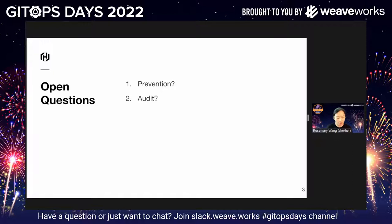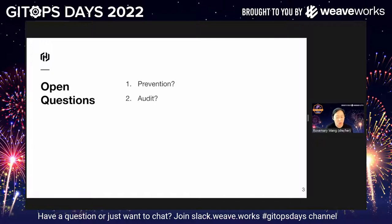Another big question that I got from the open source community and developers was about auditing. My security team wants me to audit how I'm using these secrets. When you have this model of encrypting and then putting it in version control, it's really difficult to ascertain who's using the secret, when, how, and why, unless you actually track it from the access perspective of the target infrastructure or target API that the credential is helping you access. From an audit perspective, security teams just want to know who's using what secrets.